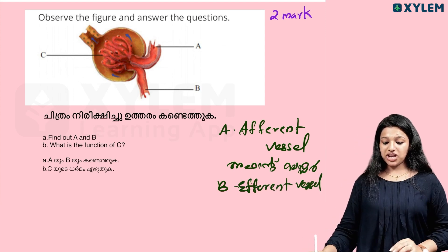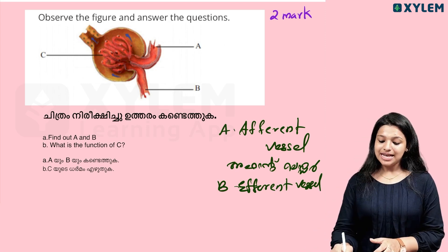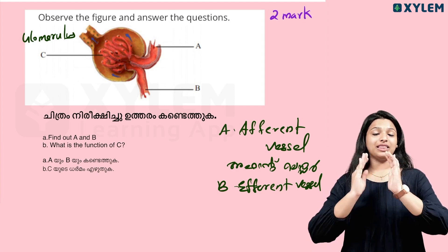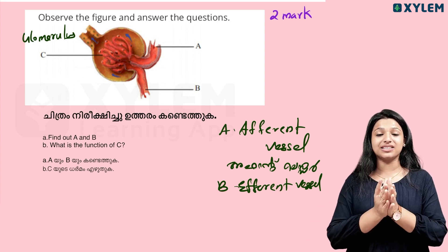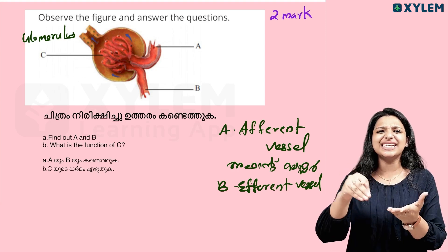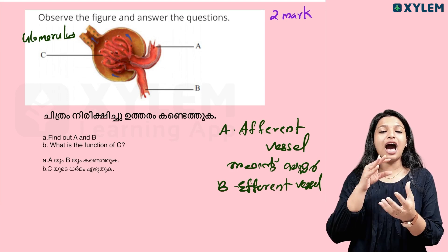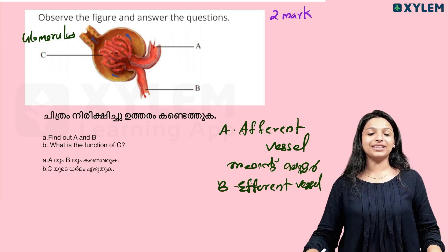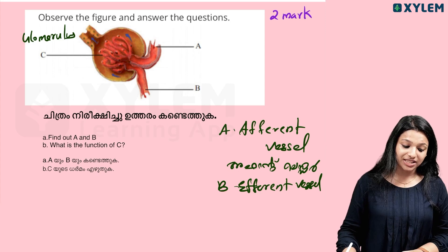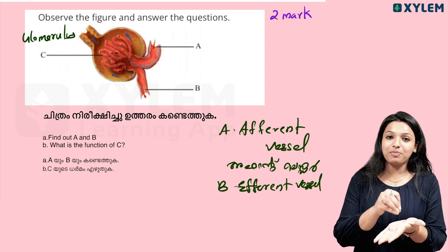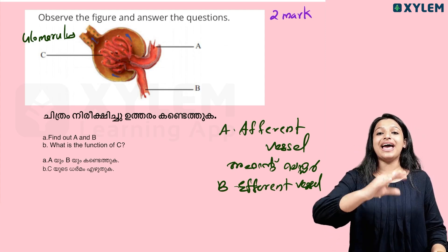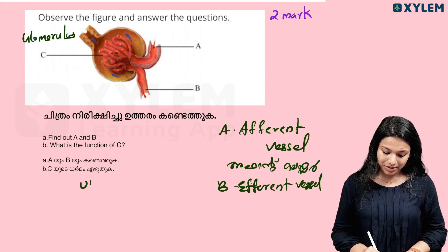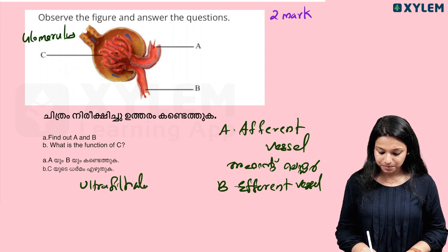What is the function of C? C relates to filtration in the glomerulus. The afferent vessel has a larger diameter, creating pressure across all the capillaries. That pressure drives filtration — blood flows through this membrane and ultrafiltration takes place in the glomerulus.